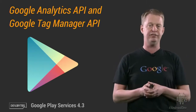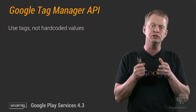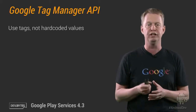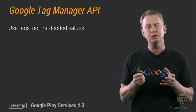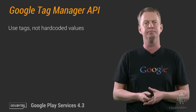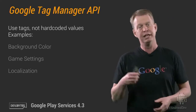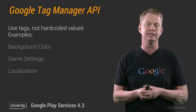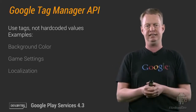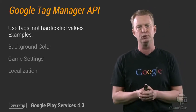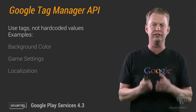So let's look at what these APIs contain. We'll start off with the Google Tag Manager, which lets you use tags in your apps instead of hard-coding values. These tags are then substituted for values that you have stored in the Tag Manager at runtime. This can, for example, be used to manage background colors of your app, game settings, and localization settings. Since the values of the tags are stored in the Tag Manager, this eliminates the need to push your entire app from Google Play again — you can simply change the value of the tag in the Google Tag Manager.